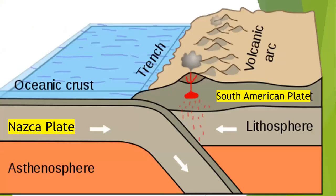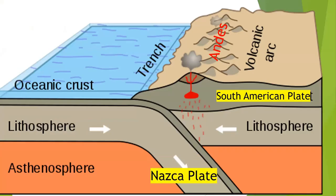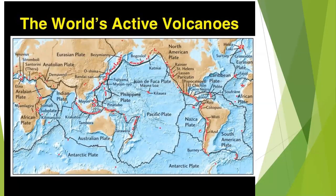Now, the Andes formed over a subducting plate. They're on the edge of the South American plate, and the Nazca plate, an oceanic plate, is busy subducting underneath it. As the plate subducts, it brings water with it, and the water causes melting in the plate above it. That melted rock becomes the lava of a volcano like Cotopaxi. That's basically how most volcanoes on Earth are formed — they are formed at the edge of plate boundaries.